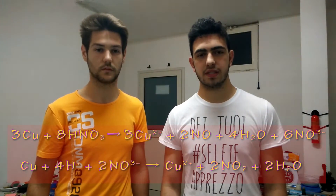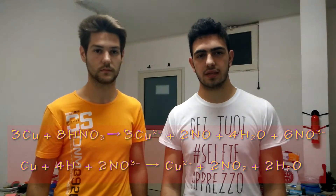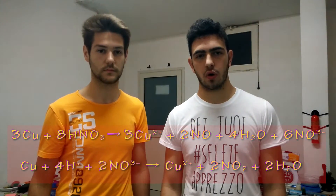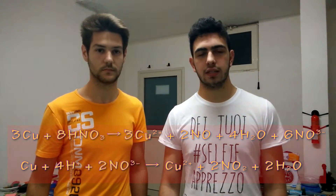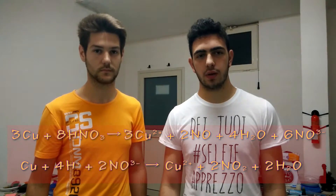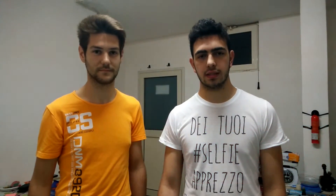First, the nitric acid does not react with copper due to a process called passivation, which happens when our nitric acid is too pure. We will add a little bit of water to lower the purity of the nitric acid and we will see the violent reaction that produces nitrogen dioxide.